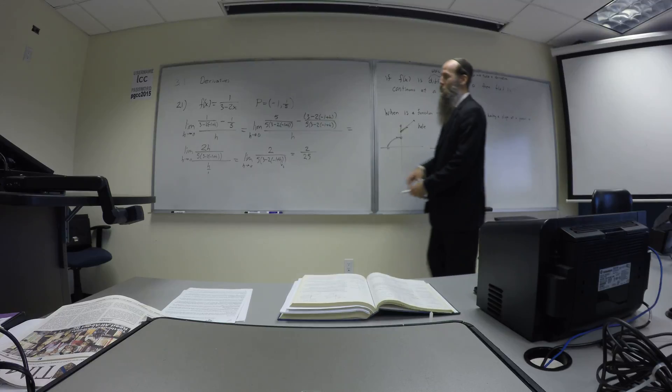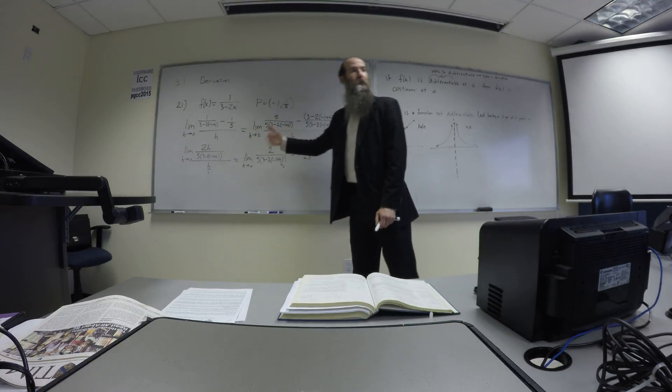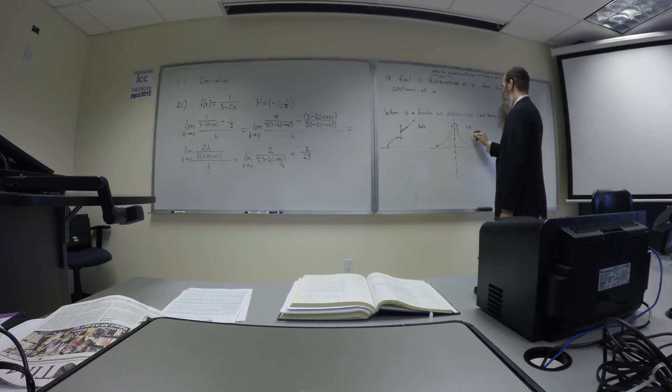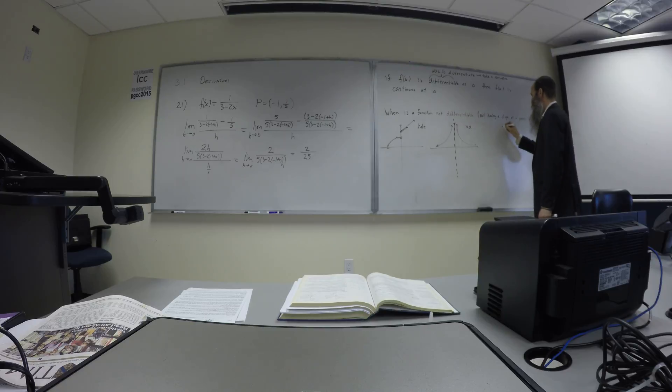So the derivative is a limit, which is what it is. If it's going to be infinite, it doesn't exist. Right? We said DNE for all infinite limits, right? Okay.